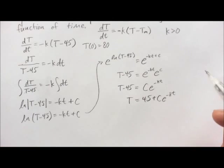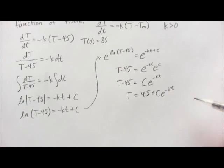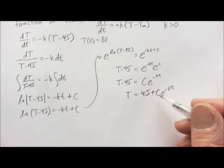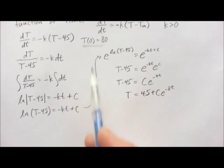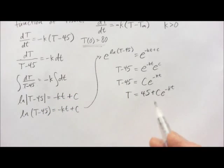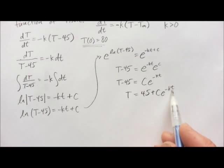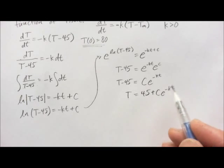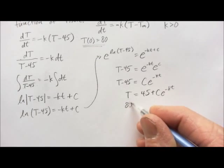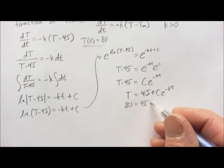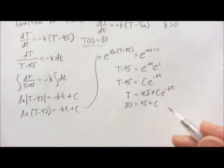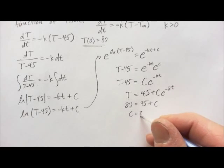So, that's the solution to our differential equation. Notice it has two constants in it, capital C and little K here. And we can find capital C by using this initial condition. So, the temperature at time zero is 80. If we put 80 in for the temperature and zero in here for the time, when we put zero in for time, this becomes one. So, we have 80 equals 45 plus C. So, we subtract 45 from both sides, we find C equals 35.